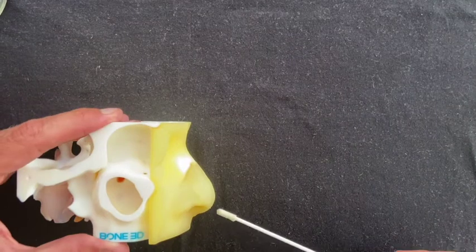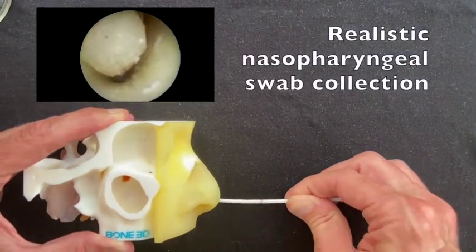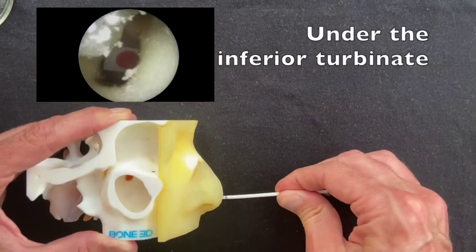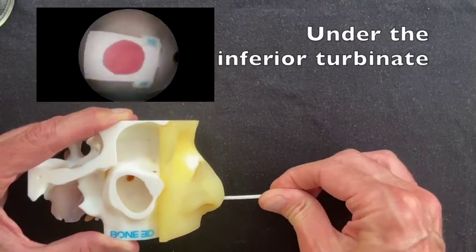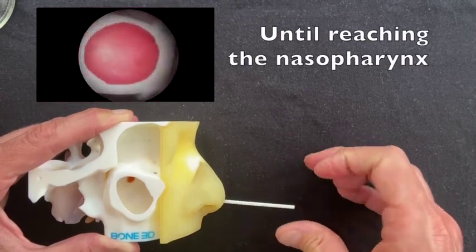The simulator allows the user to conduct realistic nasopharyngeal swab collection by inserting the swab through the nostril parallel to the palate and gently advancing it horizontally down to the nasopharynx where the color pad is located.